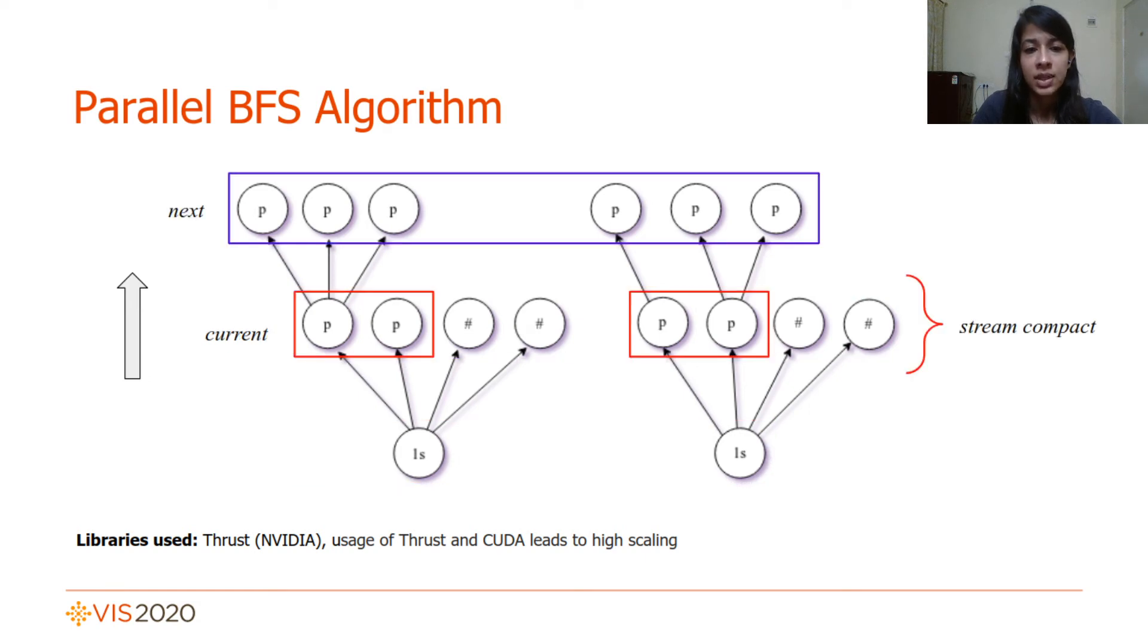In this example, the second iteration will consist of the stream-compacted set of valid pairs discovered in the first iteration, and these nodes will go on to discover the next frontier. The algorithm terminates when all paths reach 2-saddles and the frontier becomes empty.